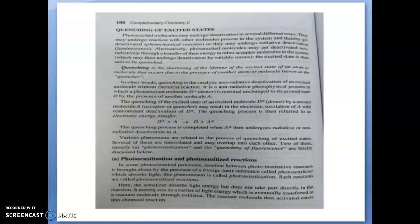One molecule cannot absorb energy on its own, but a higher energy is made available by transferring it through another foreign molecule — an inert substance. That inert substance will absorb light, get activated, and transfer that activated energy to another molecule that is undergoing the photochemical reaction. The sensitizer absorbs light energy but does not take part directly in the reaction — it merely acts as a carrier of light energy which is eventually transferred to a reacting molecule through collision. The reactive molecule is then activated into chemical reaction.